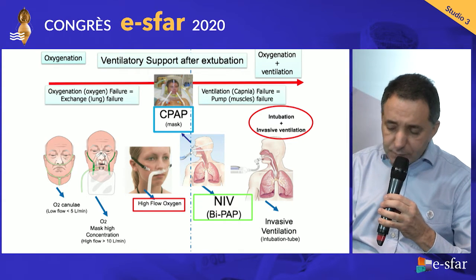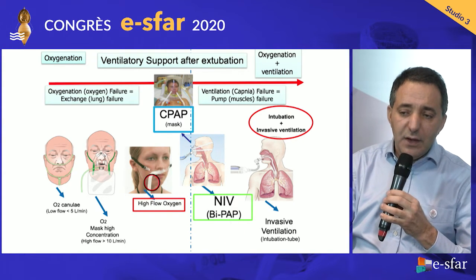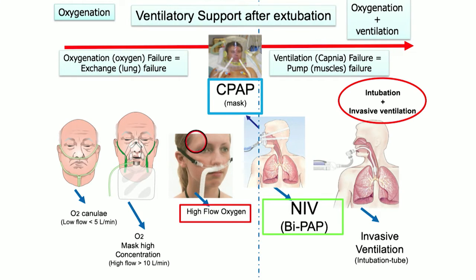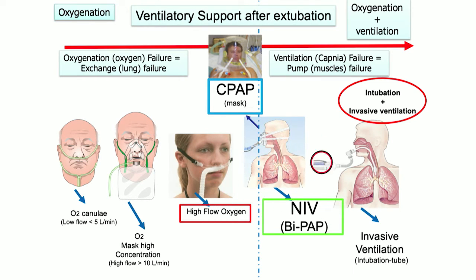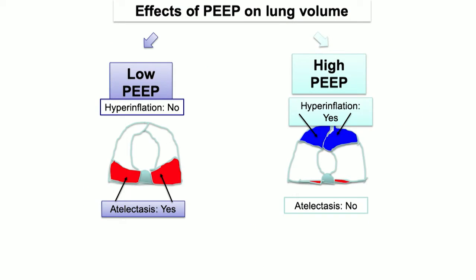From the left to the right on this slide, you have light oxygenation depression — meaning mild hypoxemia — and more to the right, more severe hypoxemia. Here is the frontier between hypoxemia due to oxygenation defect and muscle failure, meaning hypercapnia where you need a machine to assure ventilation. Audrey will develop this part.